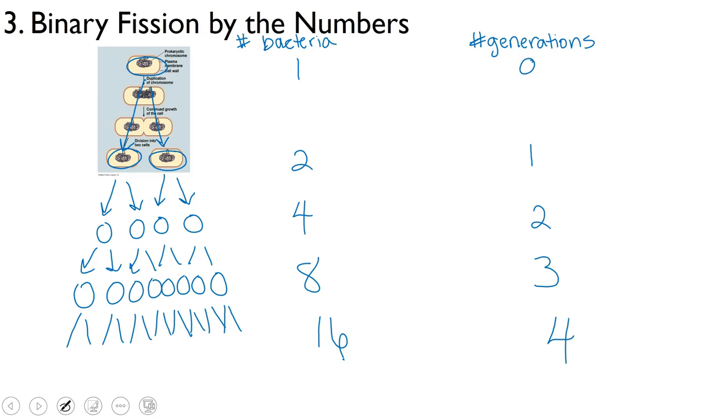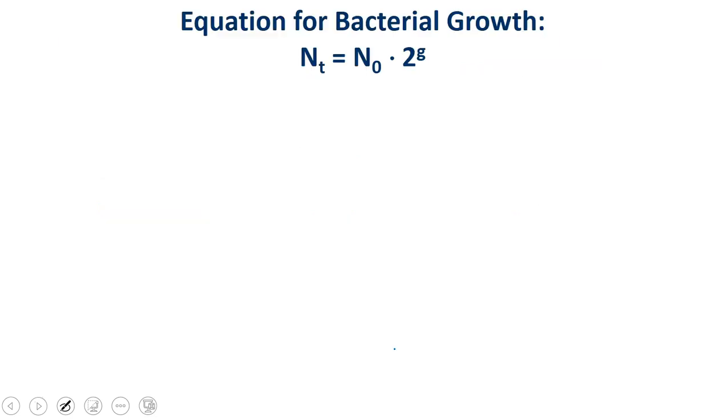Now it would be a real pain to go through every generation and have to draw and count our bacteria this way. So conveniently, there is actually a way we can calculate how many bacteria we have based on what number generation we're on. So one is actually equivalent to two to the zero power. So at generation zero, we have two to the zero bacteria or one bacteria. At our first generation, we have two to the first power, which is two. At our second generation, we have two to the second power, which is equal to four. At our third generation, we've got two to the third, which equals eight. And at our fourth generation, we've got two to the fourth, which equals 16. So by using the generation number as the exponent for this exponential growth, we can actually calculate how many bacteria we have. And then we can apply this to a larger equation. So we can calculate how many bacteria we have at any given point, no matter how many bacteria we start with.